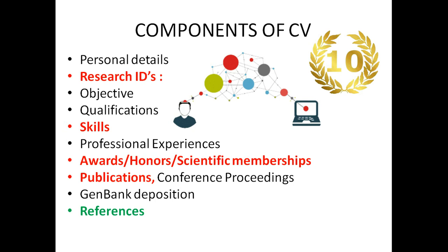First comes your personal details, followed by your researcher IDs — that is Google Scholar ID, ORCID ID, ResearchGate ID, Scopus ID, etc. Then comes your objective: what aims you have for your future career. Then comes your qualification, the most recent qualification you have achieved. Followed by a very important section — your skills — where you need to mention your core scientific skills which you have implemented in your scientific career.